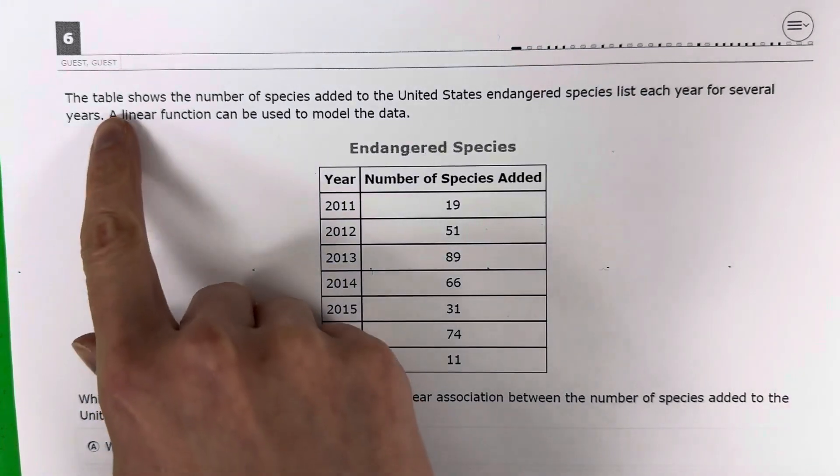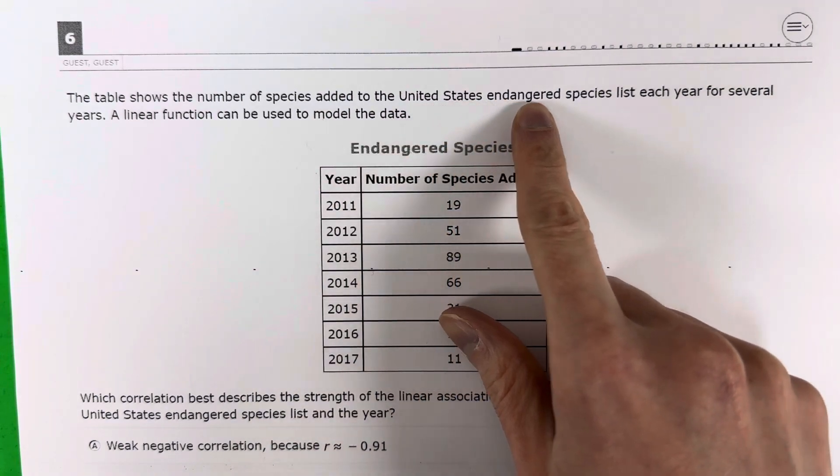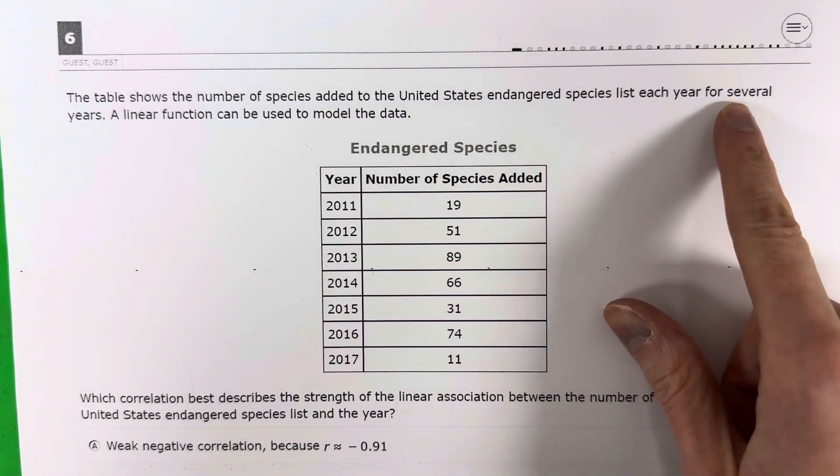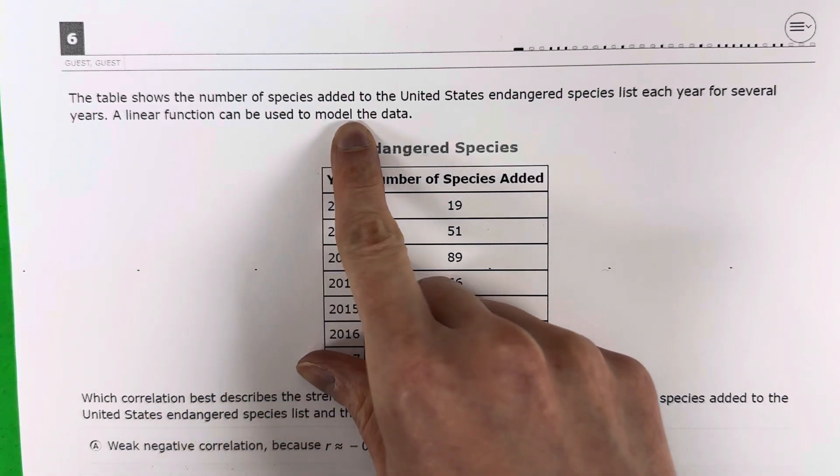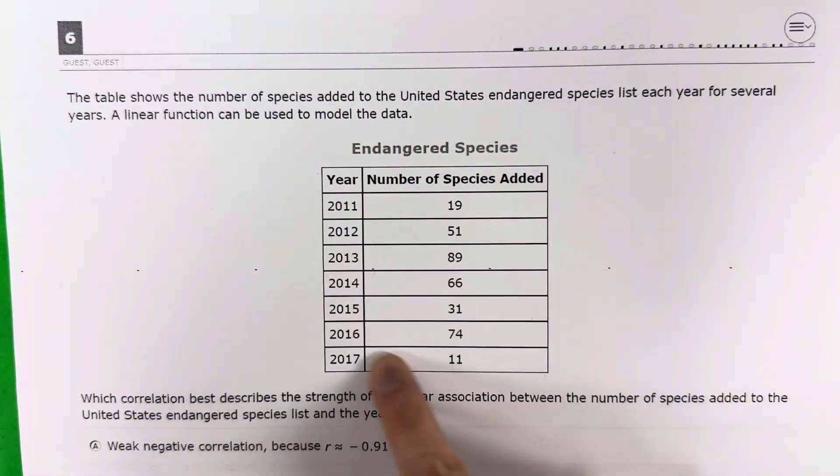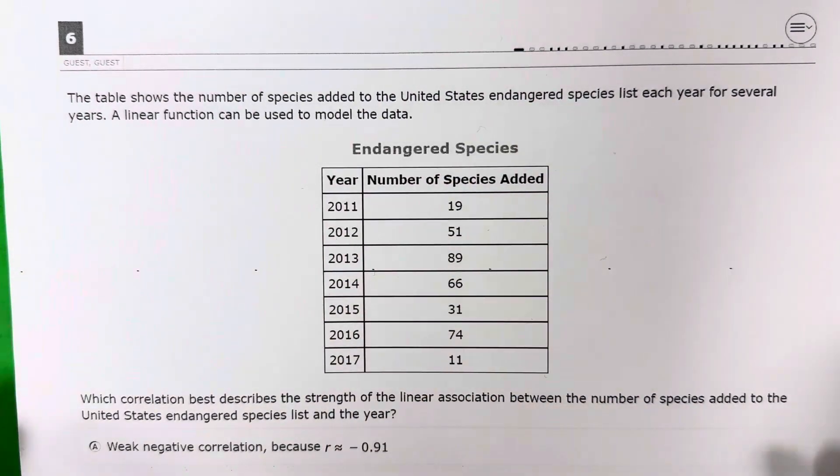Question 6. The table shows the number of species added to the United States Endangered Species list each year for several years. A linear function can be used to model the data. So here I have a big table. The x is years and y is the number of species added.